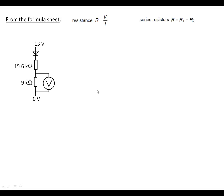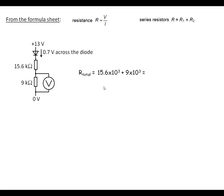Next example, we've got a diode here. So what do we know? Well, we know across the diode, forward biased, there'll be 0.7 volts across it. Let's work through this then. The next thing to do is work out the total resistance we've got in this part here. So if we add the two resistors together — 15.6K and 9K — it comes out as 24.6 kilohms.